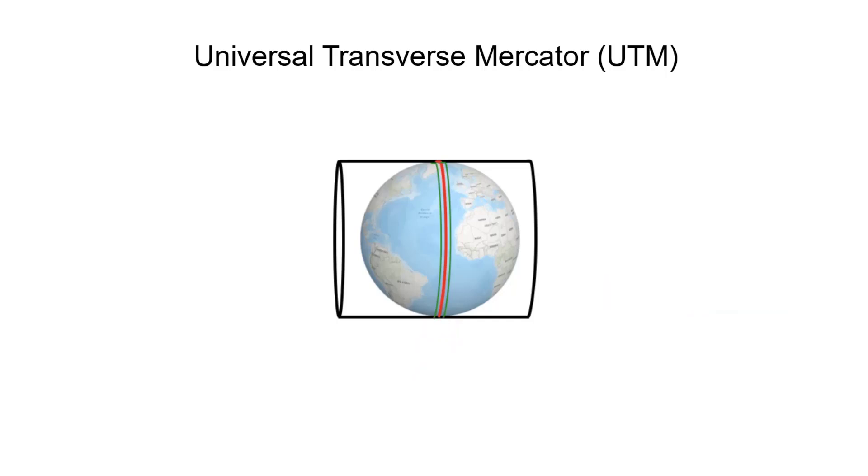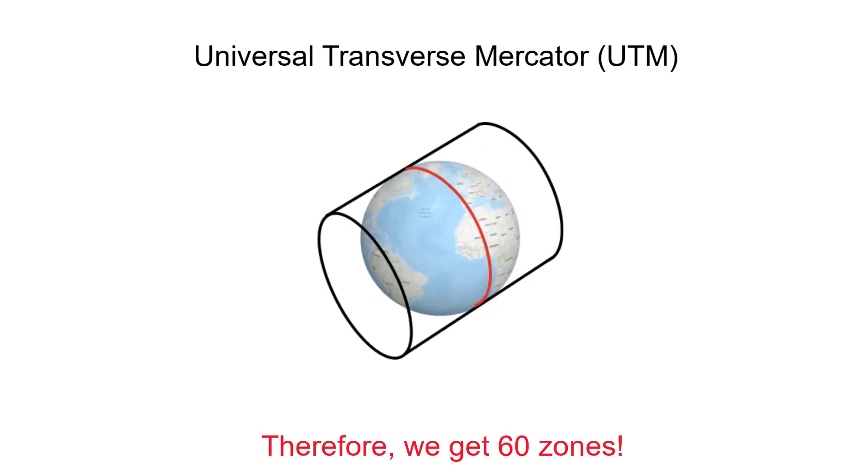To create further zones, the cylinder rotates to create each zone. So it will rotate 59 times from its initial position.